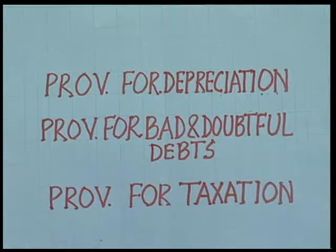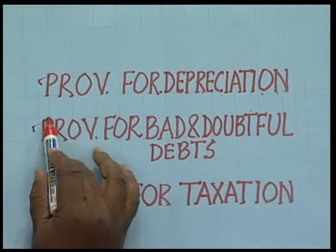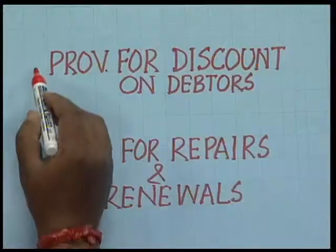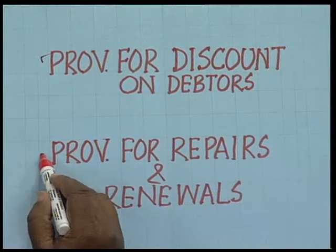Similarly, suppose you need to make some repairs on machinery in the future. You cannot exactly estimate the amount of expenses to be incurred, so we have to make a provision for that as well. Examples of provisions made in the current year include: provision for depreciation, provision for bad and doubtful debts, provision for taxation, provision for discount on debtors, and provision for repairs and renewals.